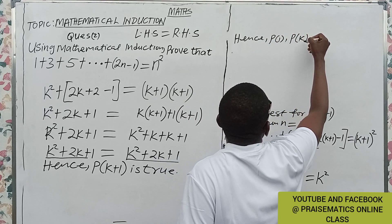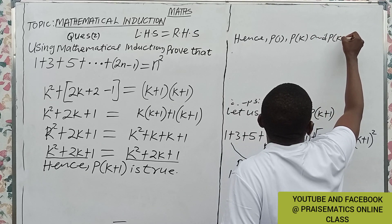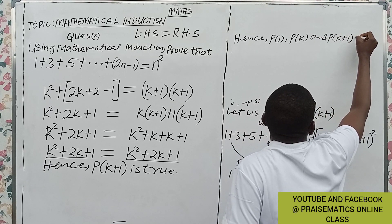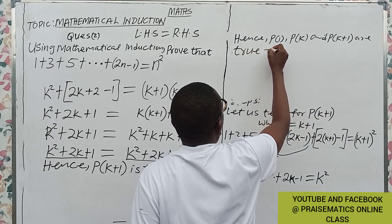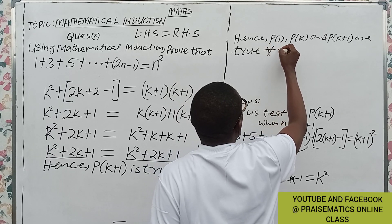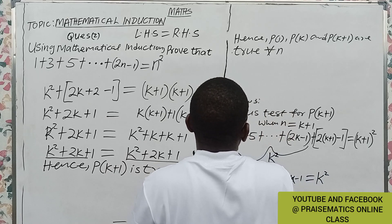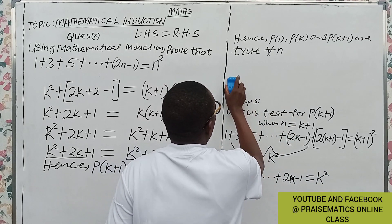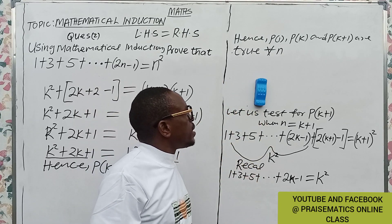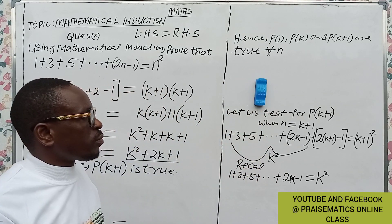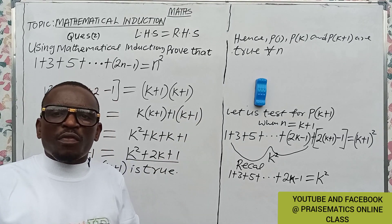P(k + 1) is also true for all positive integers n. Therefore, P(k) exists, P(k + 1) exists, and P(1) exists. That is how to do it: test for P(1), test for P(k), and test for P(k + 1).